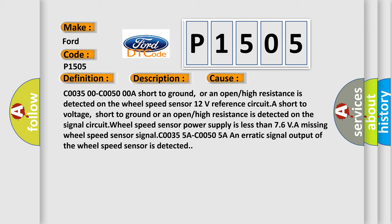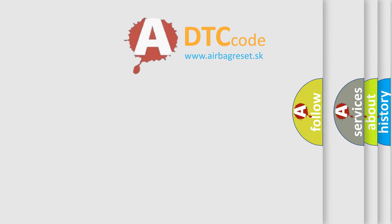C0035 00 C0050 00 A short to ground, or an open or high resistance is detected on the wheel speed sensor 12 volts reference circuit. A short to voltage, short to ground, or an open or high resistance is detected on the signal circuit. Wheel speed sensor power supply is less than 7.6V. A missing wheel speed sensor signal. C0035 5A C0050 5A, an erratic signal output of the wheel speed sensor is detected. The airbag reset website aims to provide information in 52 languages.